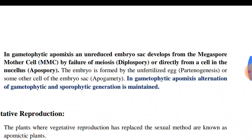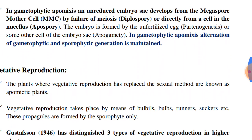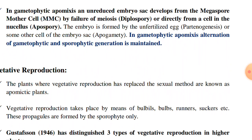In gametophytic apomyxis, an unreduced embryo sac develops from the megaspore mother cell by failure of meiosis, and this is known as diplospory, or directly from a cell in the nucellus, then it is known as apospory. The embryo is formed by the unfertilized egg, which is known as parthenogenesis — that is, formation of embryo without fertilization — or from some other cell of the embryo sac, then it is known as apogamy.